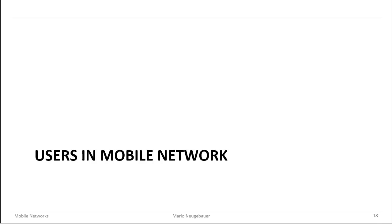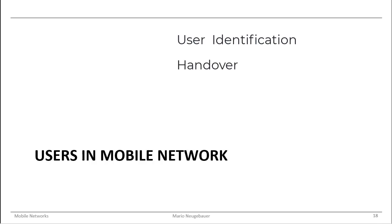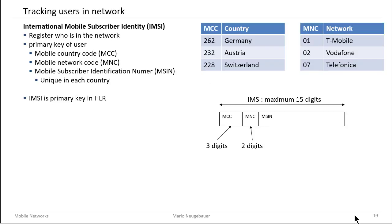The aspect of users in a mobile network is divided into three main parts. The first part is the question of how to identify users, the second is how to do the handover, and the third is how to register users and maintain the user base in the network. Let's go to the first point: tracking users in the network.